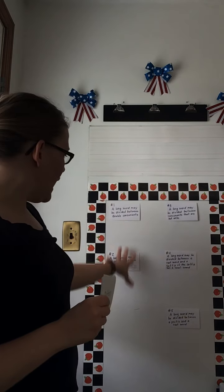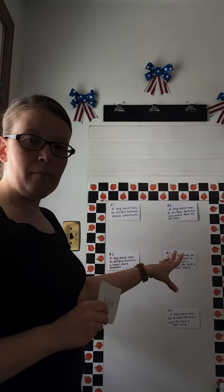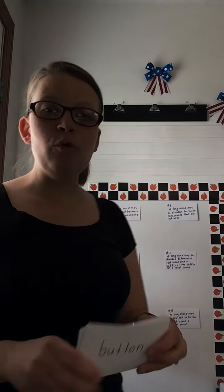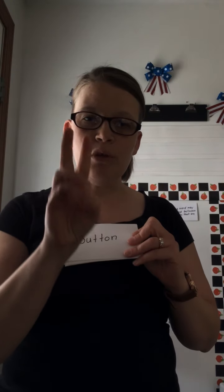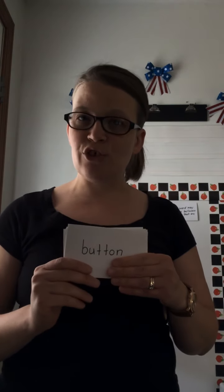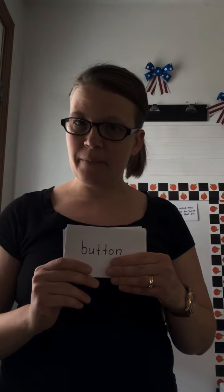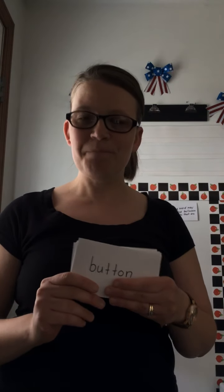On my board I have our five rules. We're going to review them. Then I'm going to show you a word and you are going to guess whether it's reason one, two, three, four, or five — why we divide it at a certain place. Let's see how you do when I tell you the answer. Here we go.